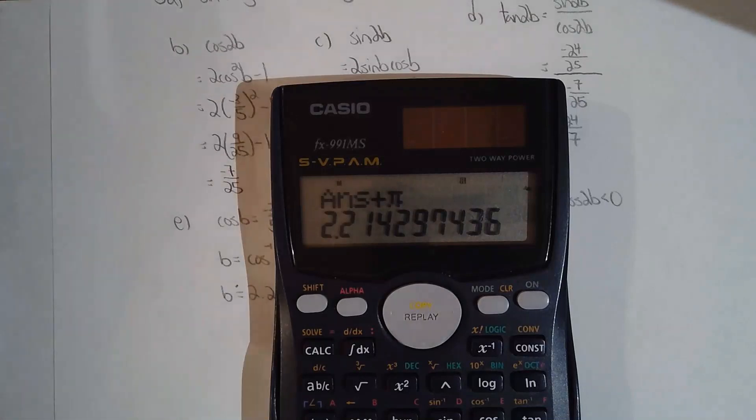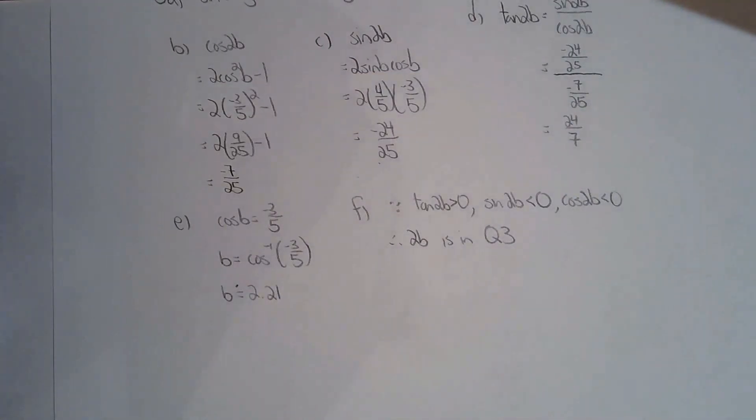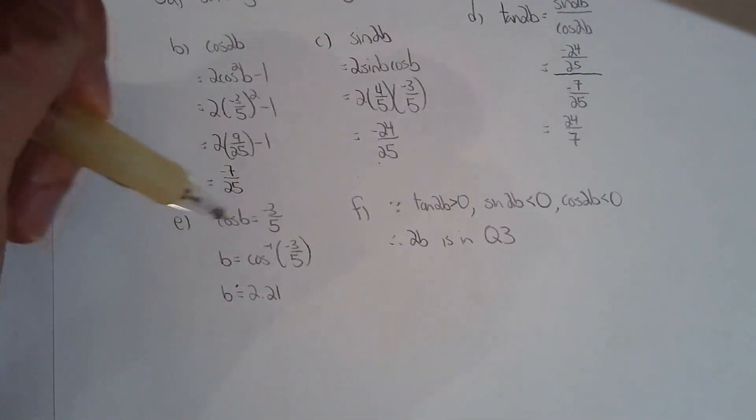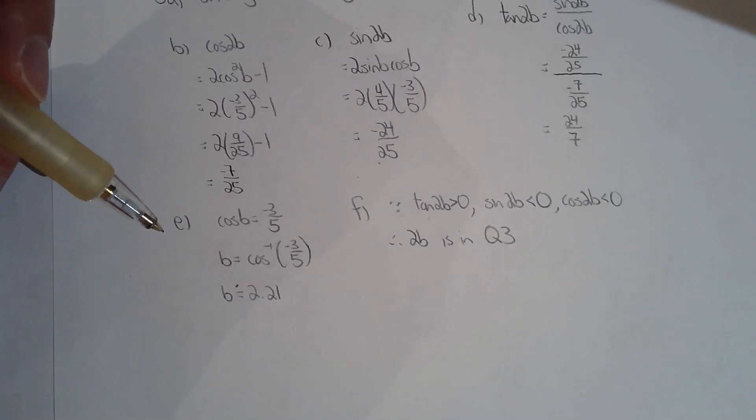So you've got to be careful what your calculator tells you. You might have to do some manipulation. You could have chose to use sine by the way. You could have took the inverse sine of four fifths, but that will give you a quadrant one answer and you have to find the quadrant two answer.